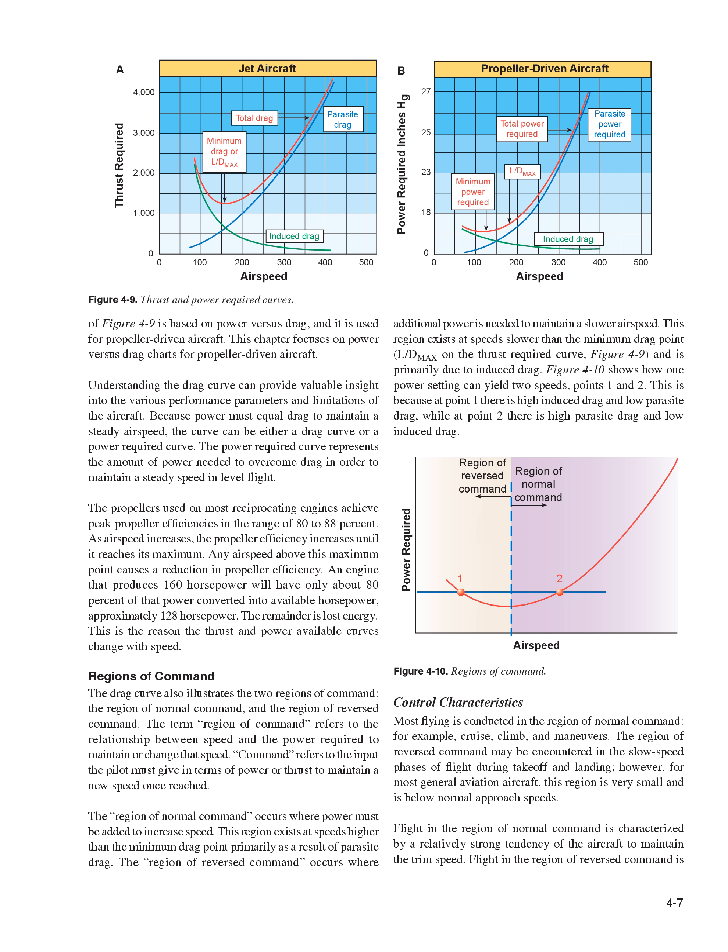Regions of Command. The drag curve illustrates two regions of command: the region of normal command and the region of reversed command. The region of normal command occurs where power must be added to increase speed, and exists at speeds higher than the minimum drag point, primarily as a result of parasite drag. The region of reversed command occurs where additional power is needed to maintain a slower airspeed. This region exists at speeds slower than the minimum drag point (L/D max) and is primarily due to induced drag. One power setting can yield two speeds because at one point there is high induced drag and low parasite drag, while at the other there is high parasite drag and low induced drag.